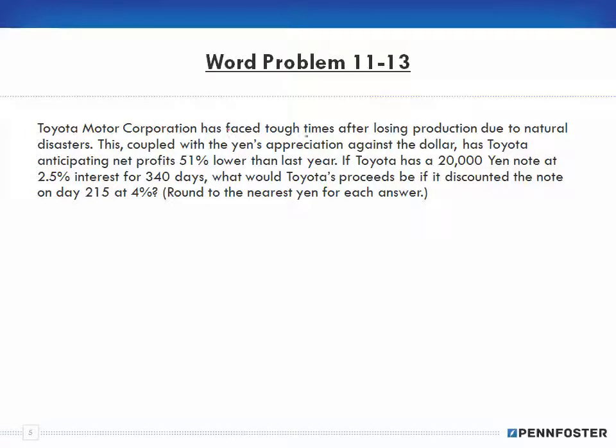Toyota Motor Corporation has faced tough times after losing production due to natural disasters. This coupled with the yen's appreciation against the dollar has Toyota anticipating net profits 51% lower than last year. If Toyota has a 20,000 yen note at 2.5% interest for 340 days, what would Toyota's proceeds be if it discounted the note on day 215 at 4%? Round to the nearest yen for each answer.